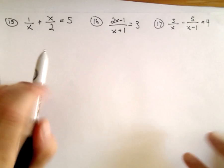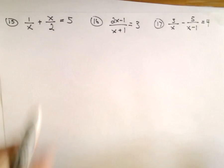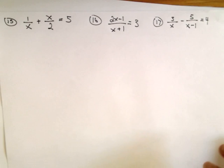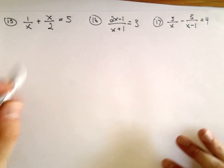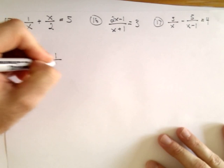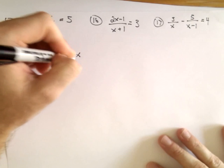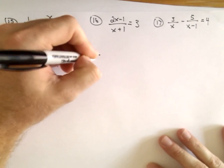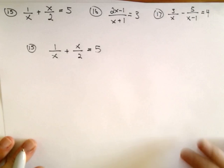Recall a rational expression is basically a fraction where you've got a variable floating around in there. So a couple different ways you could do these, let's start with number 15.